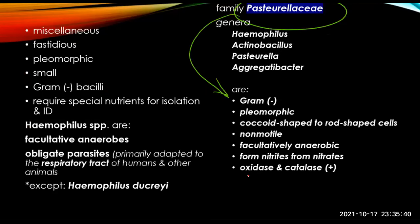This presentation describes miscellaneous, fastidious, pleomorphic, small, gram-negative bacilli, and most of these organisms need special nutrients for isolation and identification. The Haemophilus species are facultative anaerobes and obligate parasites — facultatively anaerobic and primarily adapted to the respiratory tract of humans and other animals.